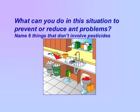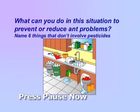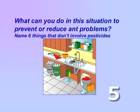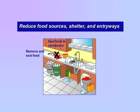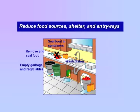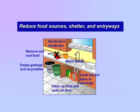What can you do in this situation to prevent or reduce ant problems? Name six things that don't involve pesticides. Prevent or reduce ant problems by reducing food sources, shelter, and entryways. Remove or clean food from the counter and seal it in containers. Transfer food from cartons and boxes into sealed containers. Wash dishes — don't leave dirty dishes in the sink overnight. Empty the garbage and recyclables regularly, and use liners in garbage cans. Clean up food and spills. Finally, caulk around pipes or openings to prevent ant entry.